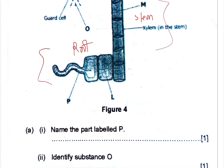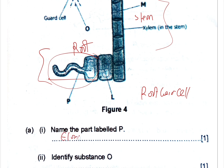The first question, question A, Roman numeral one: name the part labeled P. For the part labeled P, as you can see, it is attached to this cell. The question is not cell P but the part labeled P — meaning we are just looking at the part attached to this cell. The cell is the root hair cell, and it has an extension. This is what we call an elongated outgrowth. So this part is called elongated outgrowth, not the tail.